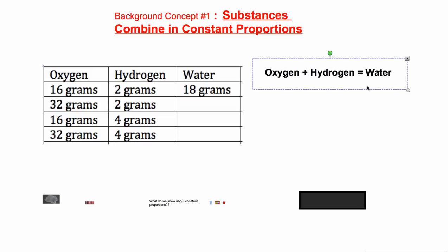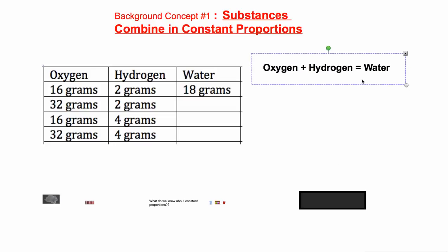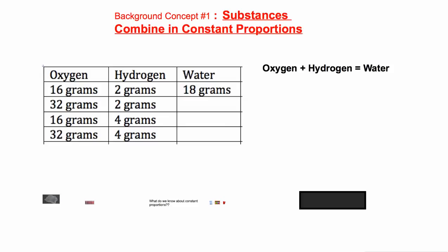Scientists wondered: if we did this, could we react them in just any old proportion? Here's some sample data any scientist could arrive at. If you react 16 grams of oxygen and 2 grams of hydrogen, what you get — even though these are both gases — is 18 grams of water. That seemed to react in a 16 to 2 ratio, or proportion.